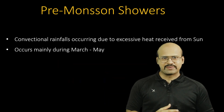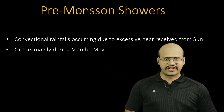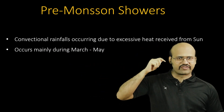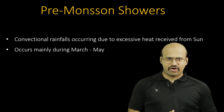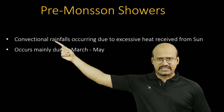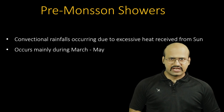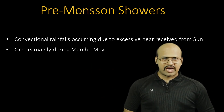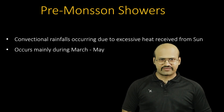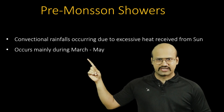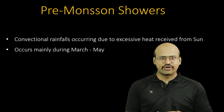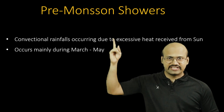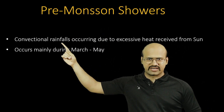What are pre-monsoon rainfalls? Pre-monsoon rainfalls are convectional rainfalls that occur due to excessive heat received from the sun. Pre-monsoon showers occur in the months from March to May, and since monsoon season starts from June, we call them pre-monsoon showers. These pre-monsoon showers are convectional rainfalls.